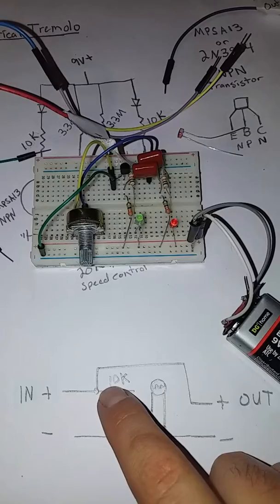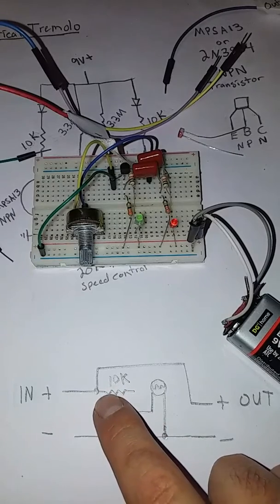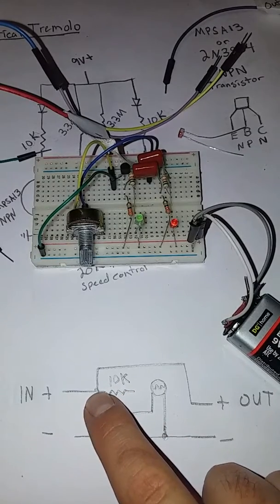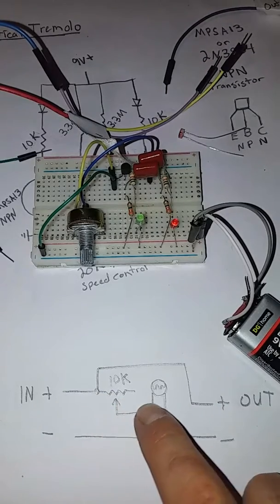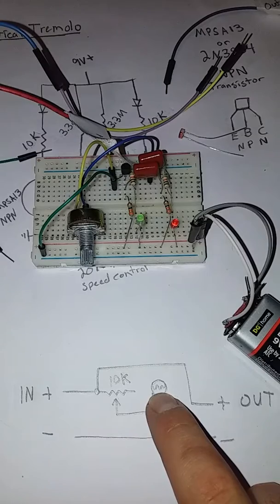Now bridged across from our positive to our negative, we have a 10k potentiometer with one end hooked into the positive. We've got the wiper of that potentiometer going into the photoresistor.